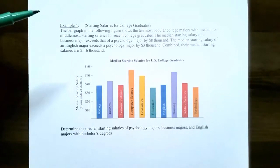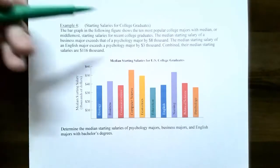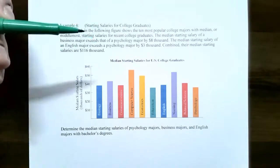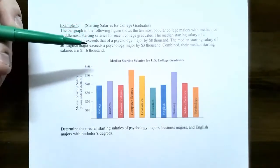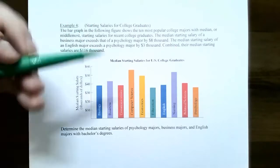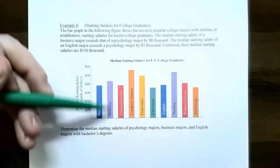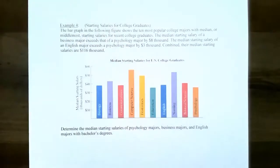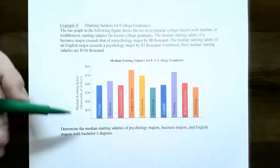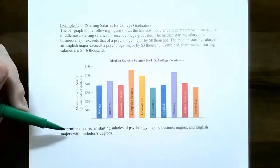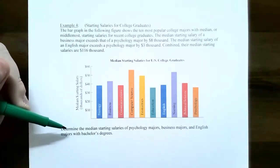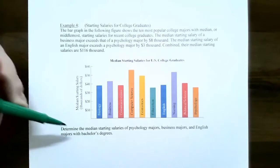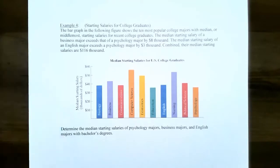We're talking about three different majors: a psychology major graduate, an English major graduate, and a business major graduate. So we're talking about the columns for business majors, English majors, and psychology majors. The other bars are not important for this problem. The question is asking us to determine the median starting salary of the psychology major, business major, and English major with bachelor's degrees.